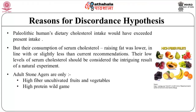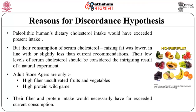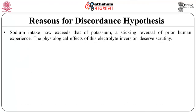Because adult Stone Agers ate only high-fibre uncultivated fruits and vegetables and high-protein wild game, their fibre and protein intake would necessarily have far exceeded current consumption. Reconstructions of ancestral nutrition indicate a micronutrient intake much above contemporary recommendations, fuelling the argument that optimum levels of dietary vitamins and minerals exceed currently accepted minimum requirements. We suspect that ancestral intake of phytochemicals and antioxidants — like that of micronutrients in general — was greater in the Palaeolithic than at present. Notably, sodium intake now exceeds that of potassium, a striking reversal of prior human experience, and the physiological effects of this electrolyte inversion deserve scrutiny.